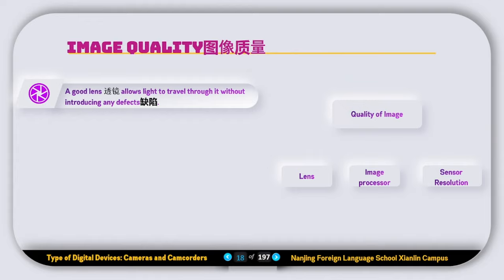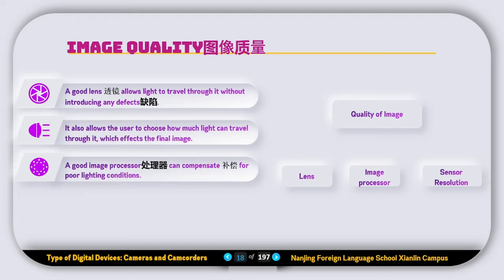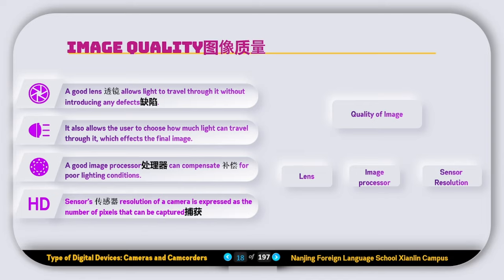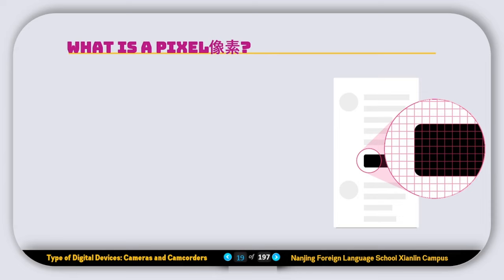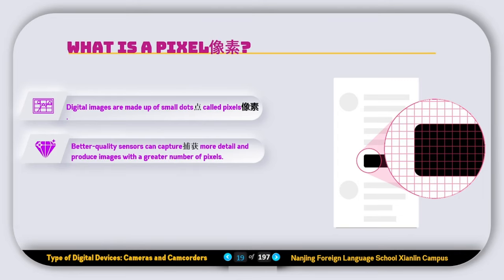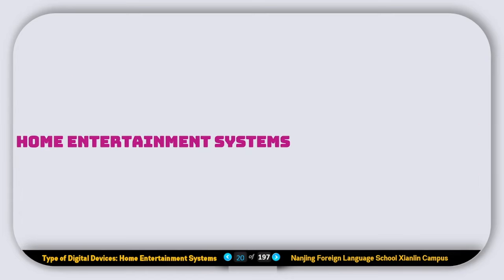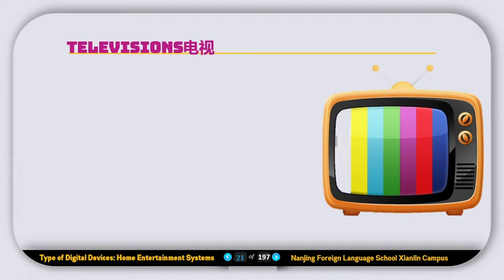Image quality is determined by three factors: the quality of the lens, the quality of the image processor, and the quality of the sensor resolution. A good lens allows light to travel through without introducing defects, and allows the user to control how much light passes through. A good image processor can compensate for poor lighting conditions. Sensor resolution is expressed as the number of pixels that can be captured. Digital images are made up of small dots called pixels — better quality sensors capture more detail and produce images with a greater number of pixels. Some cameras use sensors each dedicated to a different color or wavelength of light.